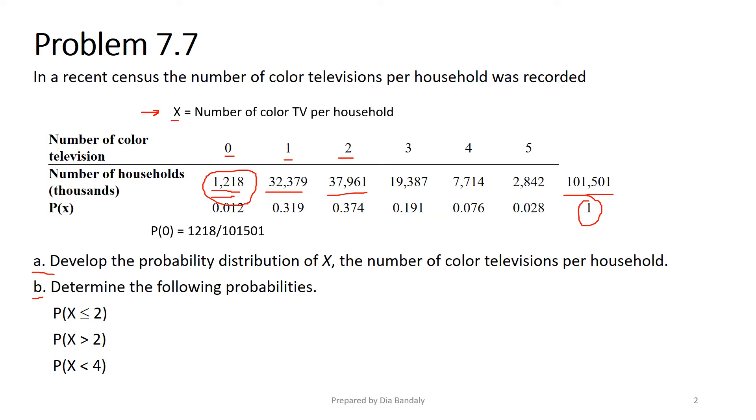Part B: Once you have the probability distribution, you can answer any question about this variable. The first question is P(X ≤ 2). We're looking for X equals 0, 1, and 2. So we sum P(0) plus P(1) plus P(2), meaning that for X to be less than or equal to 2, it can be either 0, 1, or 2. Using this basic rule of probability, we sum up these probabilities and get 0.705.